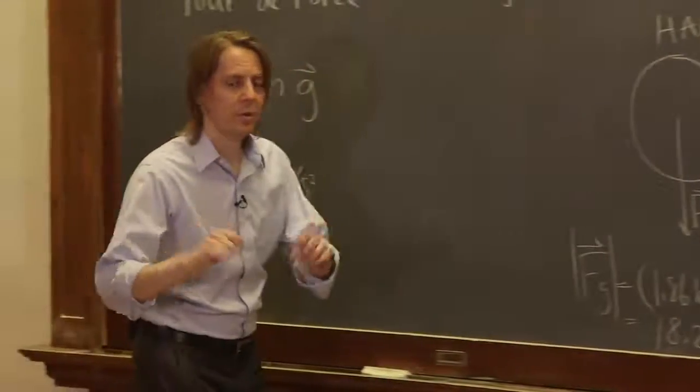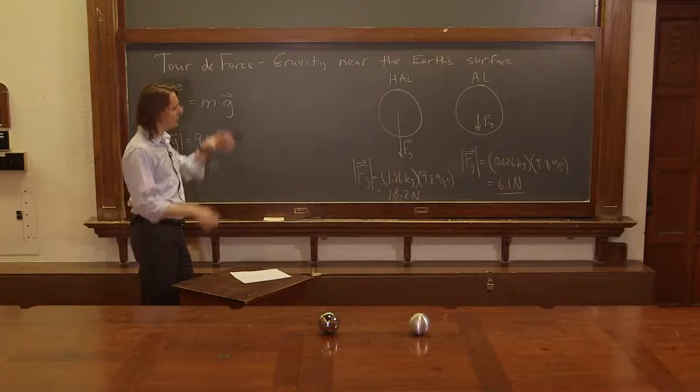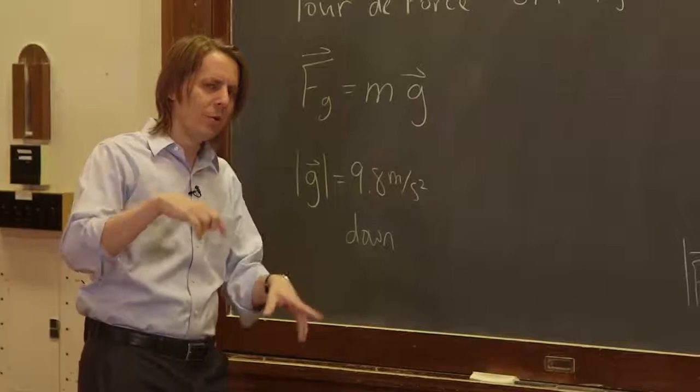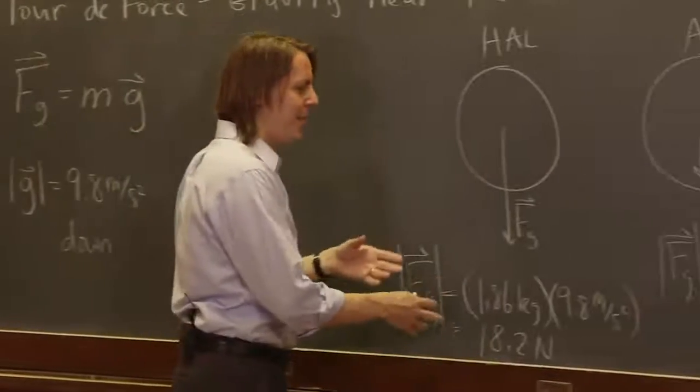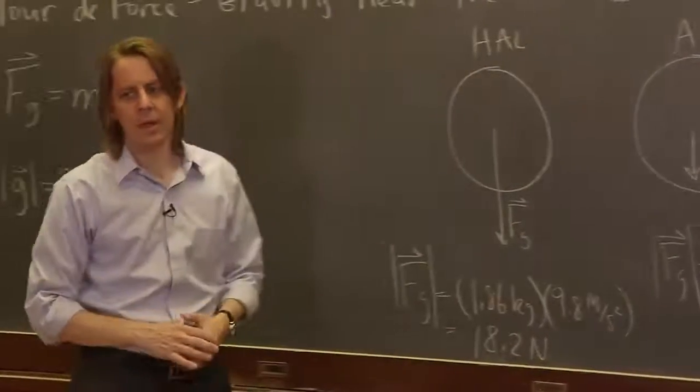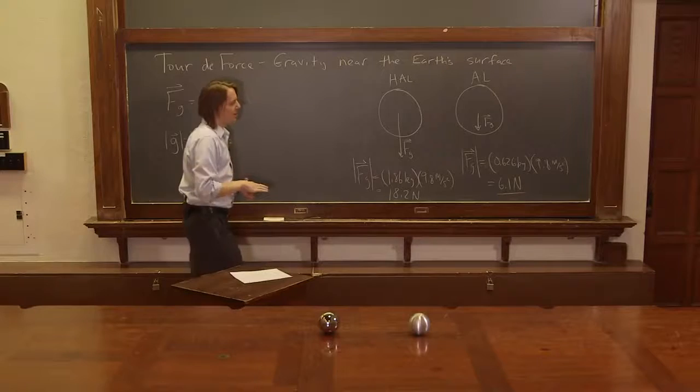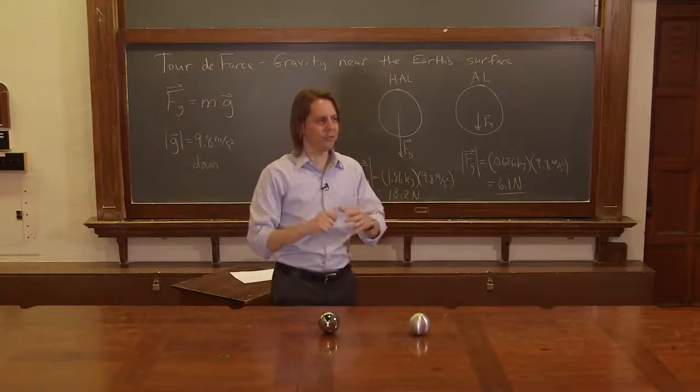So that is the force they felt when we let them go. And you may say, now wait a minute, Hal experienced a larger force, shouldn't it have fallen faster? The answer is no. It also has a larger mass, so when you divide the force by the mass you get back to them having the same acceleration. So that's what was happening in that example when they both dropped, they both felt that force.